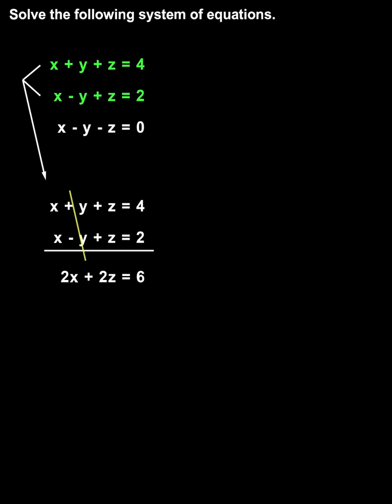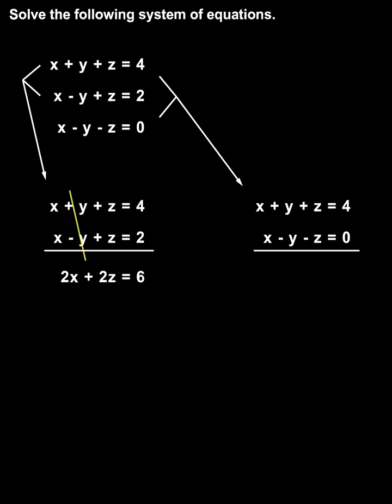We can't add the first and second equations together again, since we've already done that. However, notice that if we add the first and third equations together, the first equation has a plus y and the third equation has a minus y, so we'll be able to eliminate y. The first equation is x plus y plus z equals 4, and the third equation is x minus y minus z equals 0. Adding them together, the plus y and minus y cancel out, and as a bonus, the plus z and minus z also cancel out.